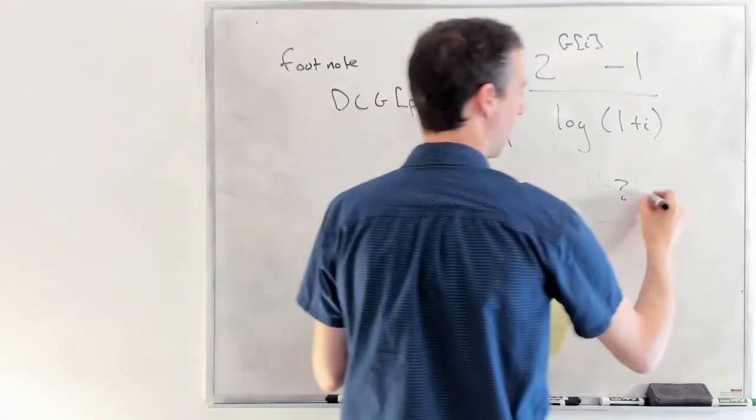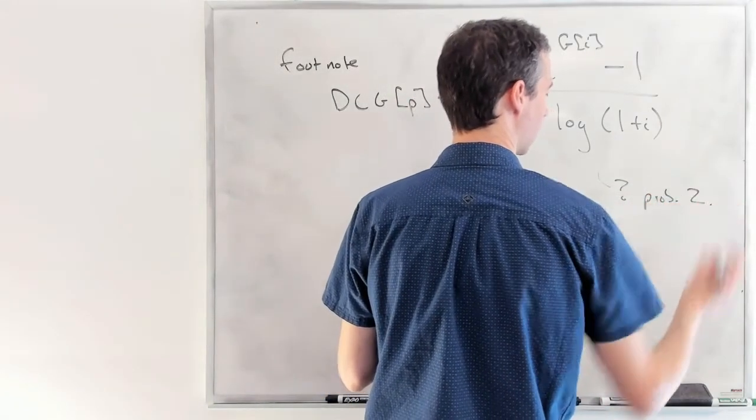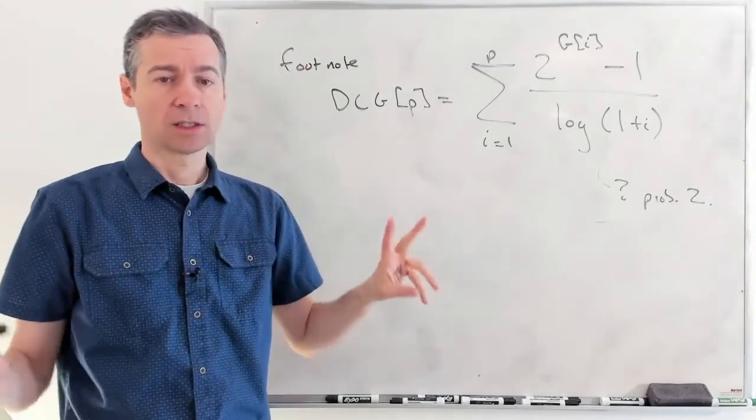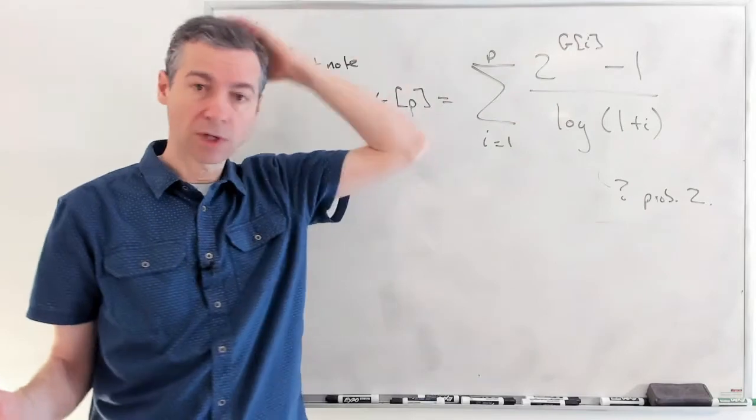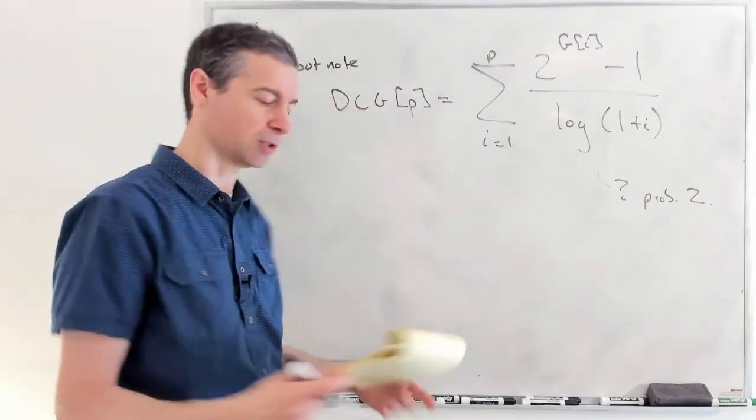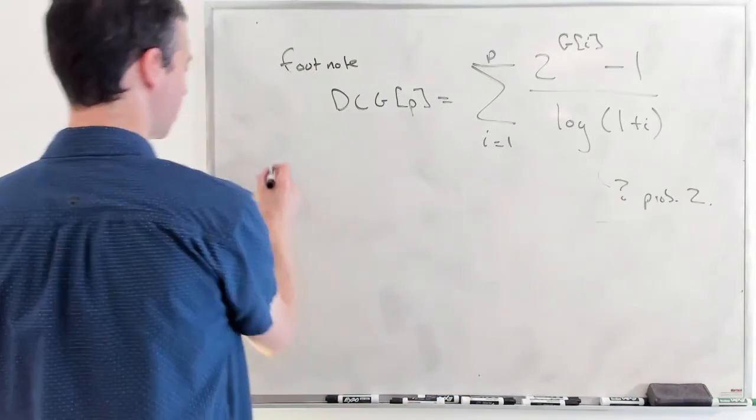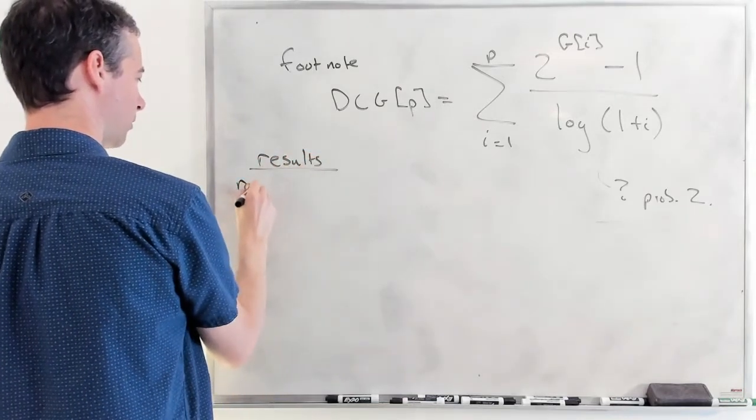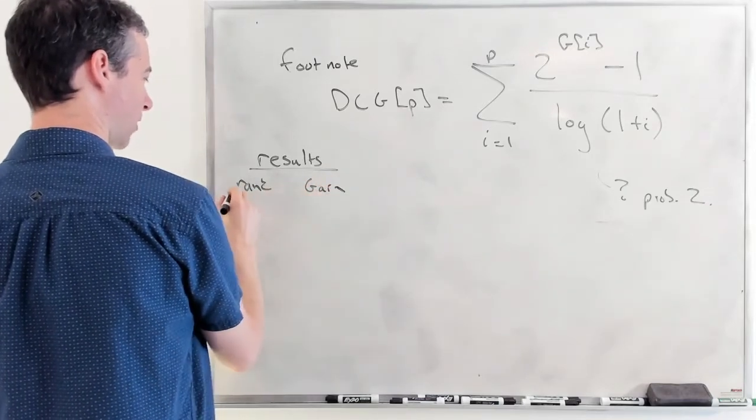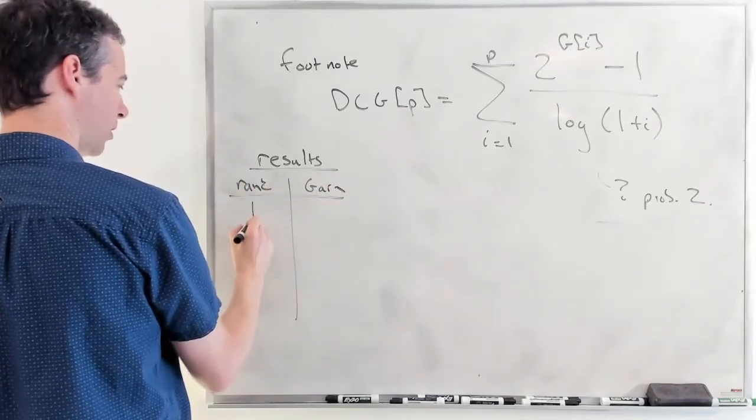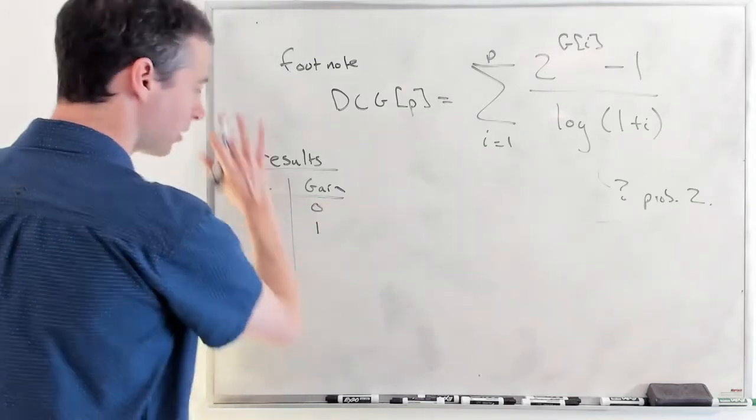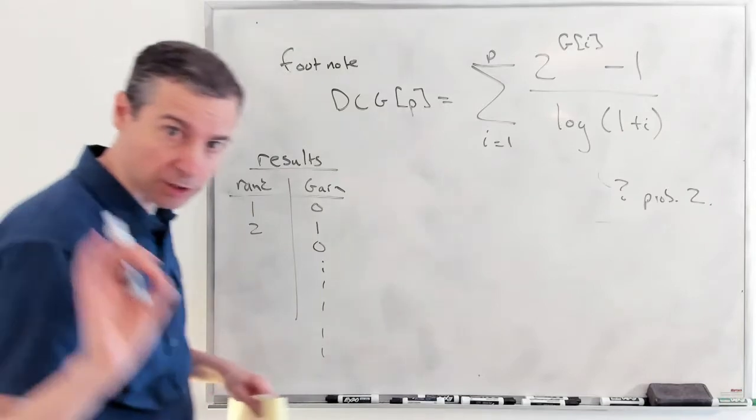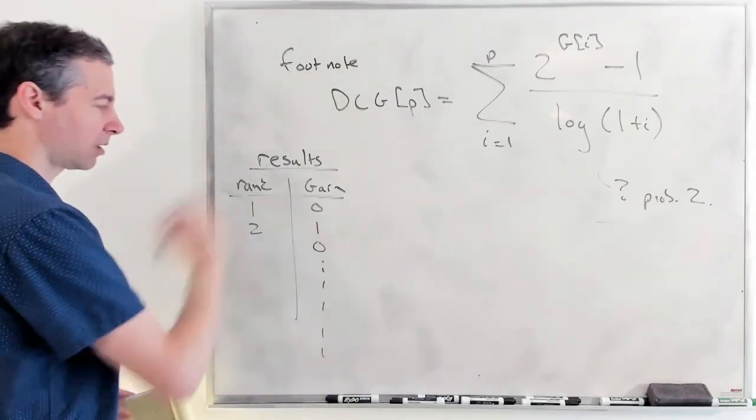That's my guess is what their assumption is to follow what the other notation was. And then they say, when gain values are binary, this behaves the same as the other formulation. Well, remember the other formulation. So let's say we had the following results. We've got a rank, and we've got a gain. And at rank 1 and 2, we go 0 and 1. And I'll just say that there's zeros forever more in the gain. So you only have a gain of one. There's only one found relevant document, and it's at rank 2.